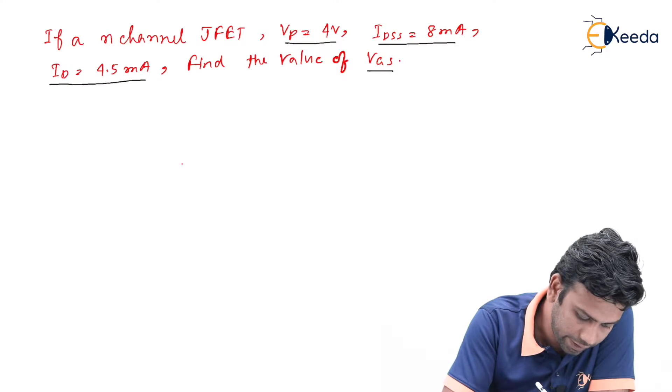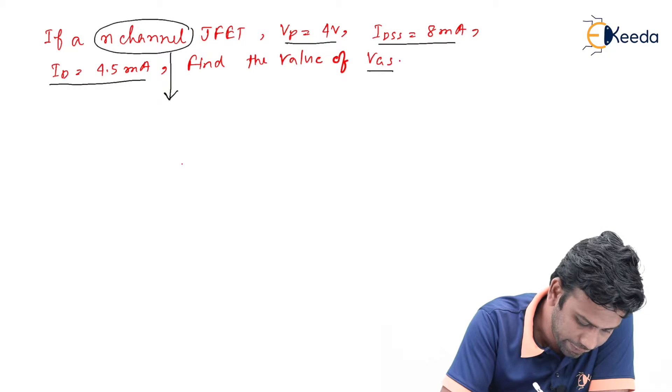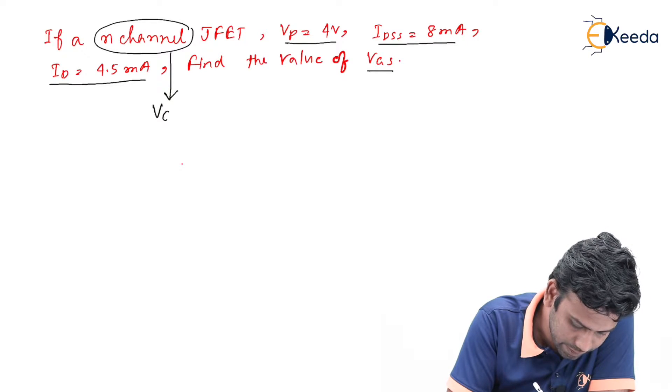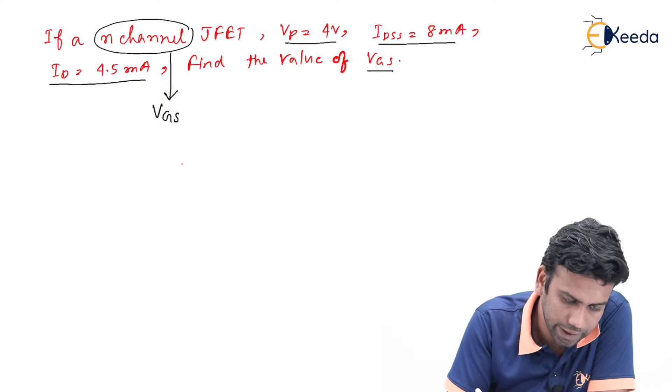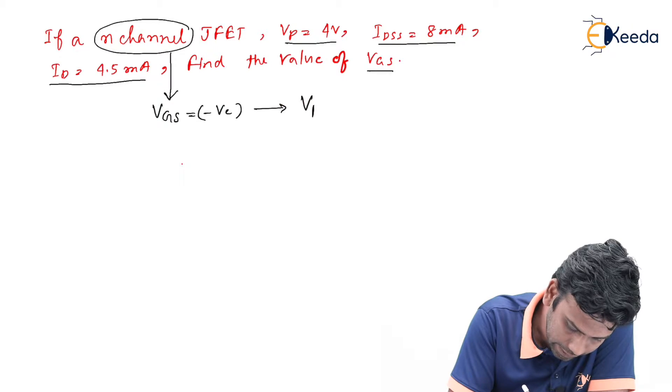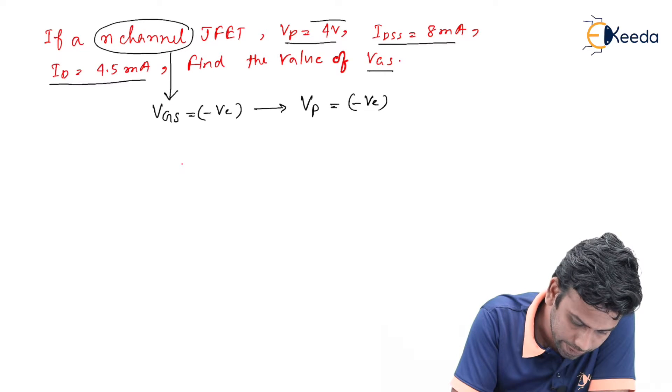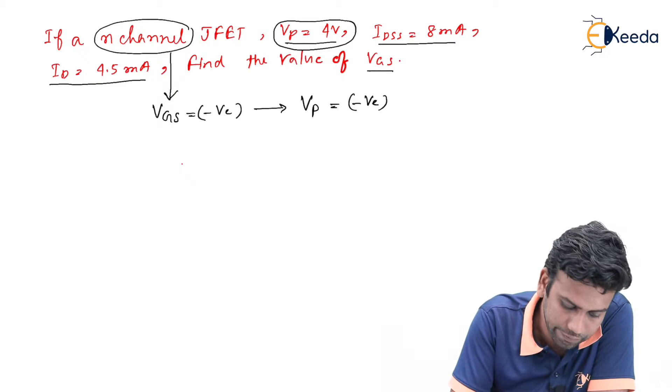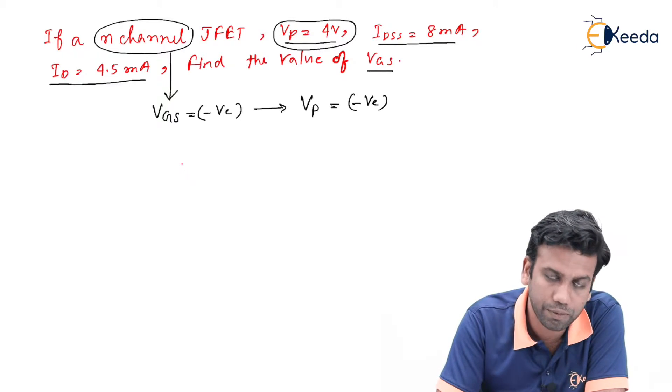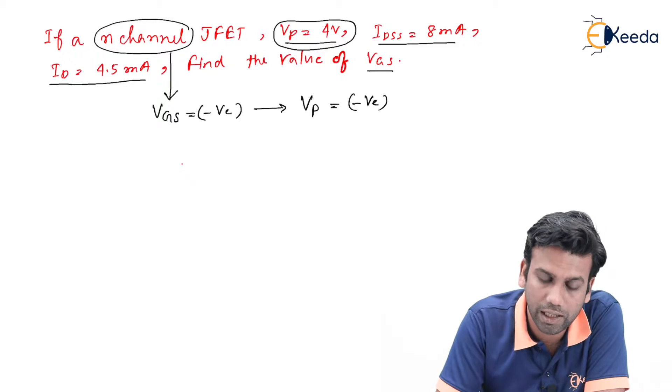Since it is given an n-channel JFET, we know that for n-channel JFET, the value of Vgs must be negative. So we can say that the pinch-off voltage will also be a negative voltage. But here in the question, it is given that Vp is 4 volt, so you have to take negative 4 volt in this case. Do not forget to take the signs of Vgs, Vp and Vds in the current equation.